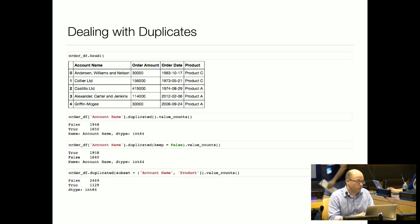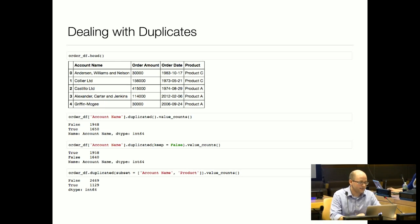The last topic is grouping by values and dealing with duplicates. We have a new DataFrame called OrderDF with account_name, order_amount, order_date, and product. If we want to think about what's duplicated in this DataFrame, Pandas has a duplicated method on Series. We take the account_name column, look at what's duplicated, and get another Boolean mask. Taking value_counts off of that, we can see that we have 1,650 values that are duplicated.